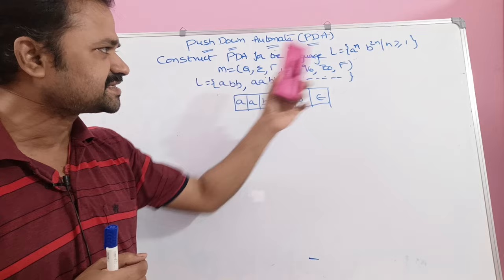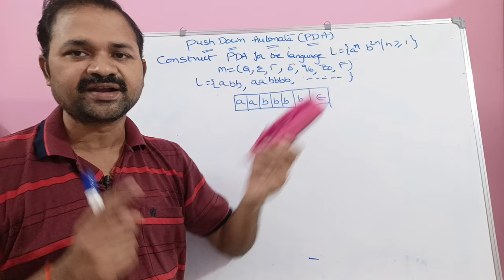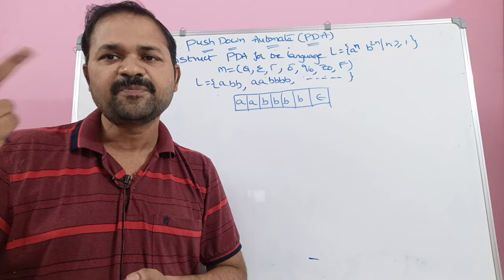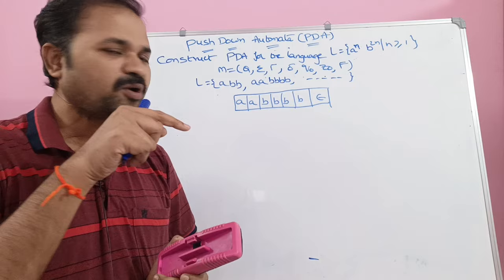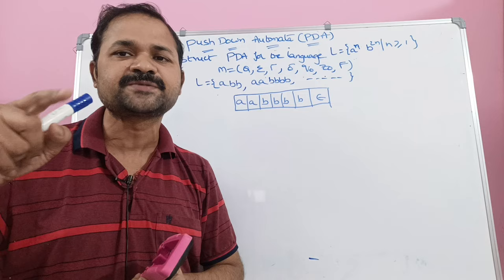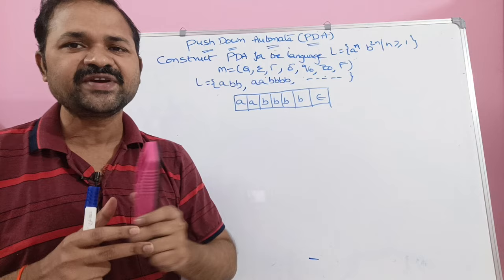Let us write the language — n starts from 1. If n = 1, then a^1 gives 1 occurrence of 'a', and b^(2×1) = b^2 gives 2 occurrences of 'b'. Next, if n = 2, then a^2 gives 2 occurrences of 'a', and b^(2×2) = b^4 gives 4 occurrences of 'b' — so 2 a's and 4 b's. Likewise, we can write n number of strings.